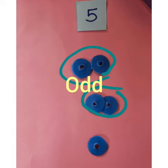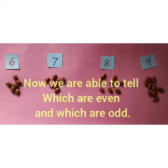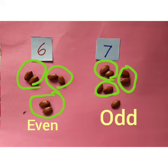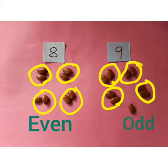Similarly, if we take numbers 6, 7, 8, and 9, then after making a group of 2 we are also able to tell whether each is even or odd. After making groups, we conclude: 6 is even, 7 is odd, 8 is even, and 9 is odd.